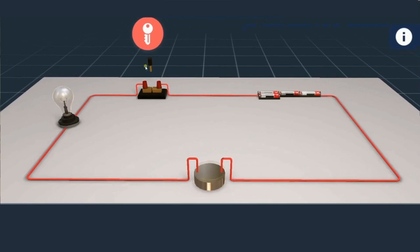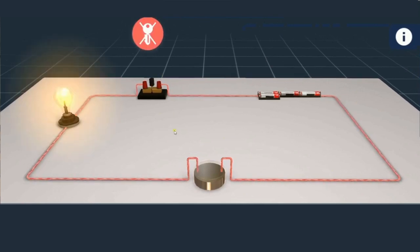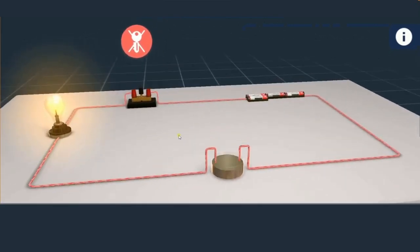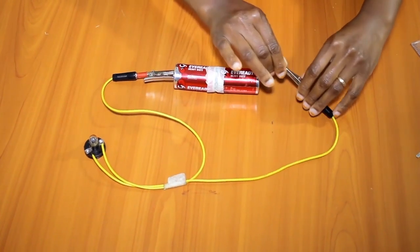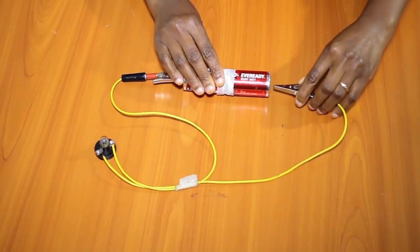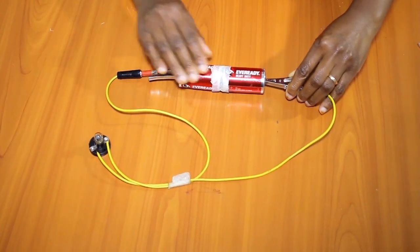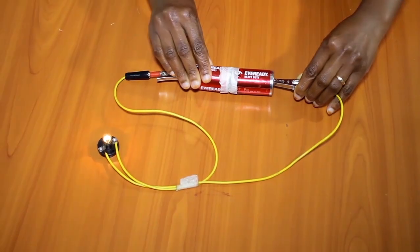I will start by demonstrating that the circuit is complete, and once complete, the bulb lights. So the circuit is complete, and when it is complete, we are able to tell when the bulb lights.